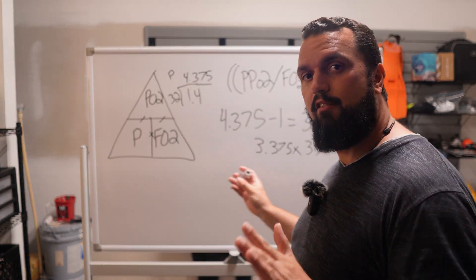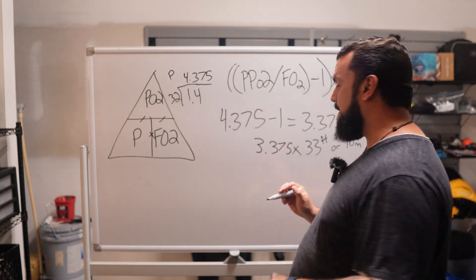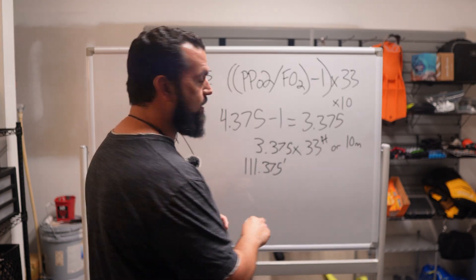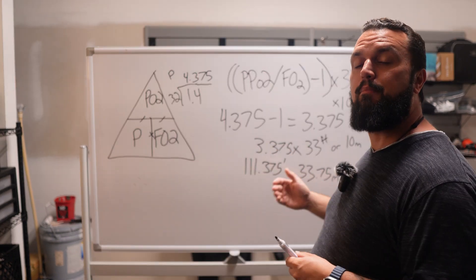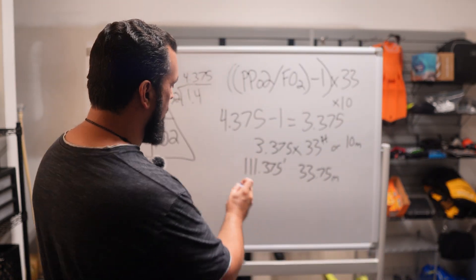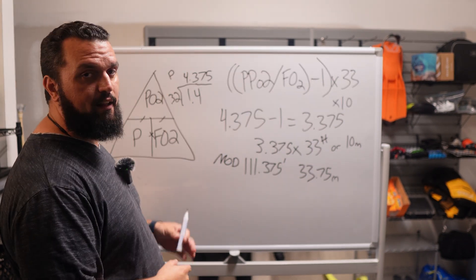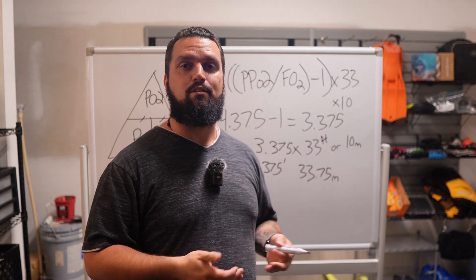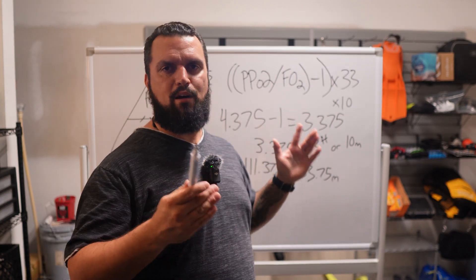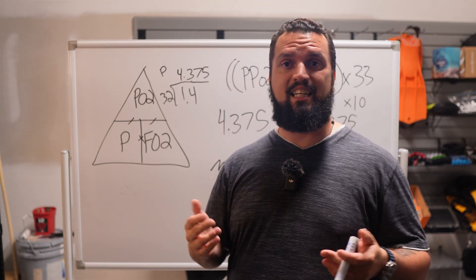We take 3.375 and multiply it by 33 for feet or by 10 for meters. That gives us our max operating depth: 111.375 feet, which we round to 111 feet, or 33.75 meters, rounded to 33.8 meters. That is our MOD. As you can see, this giant formula was simply each order-of-operations step broken out individually.